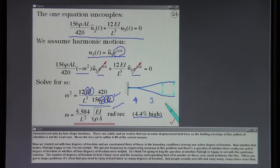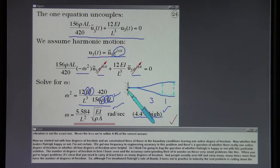Nevertheless, we're within 4.4% of the correct answer. We started out with four degrees of freedom and we constrained three of those in the boundary conditions, leaving one active degree of freedom. Now whether that makes Rayleigh happy or not, I'm not certain. We got one frequency to engineering accuracy in this problem. There's a question of whether there were really one active degree of freedom or whether all four degrees of freedom were helpful. So I think I'm going to beg the question on whether Rayleigh is happy or not with this particular solution.